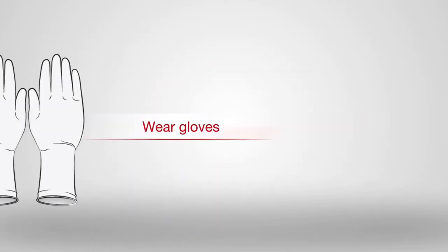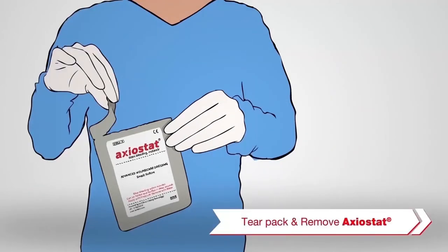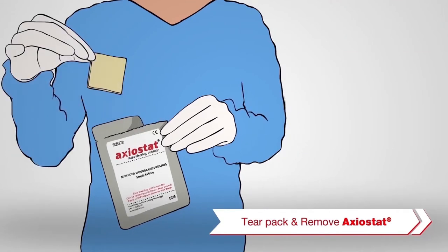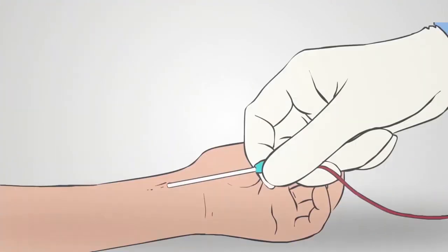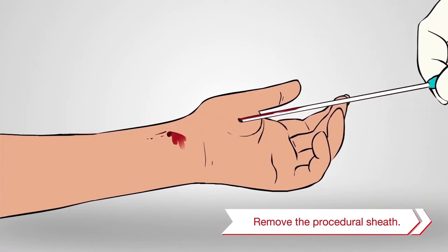Using clean, gloved hands, tear open the sterile single-use pack and remove Axiostat. Remove the procedural sheath carefully.